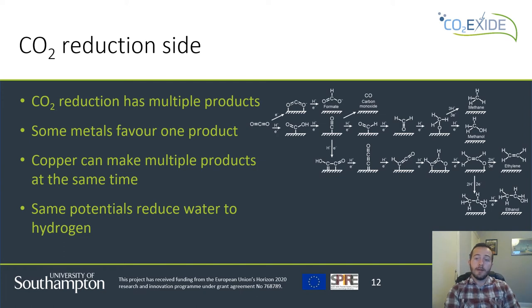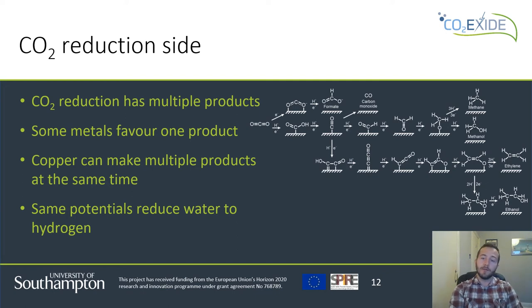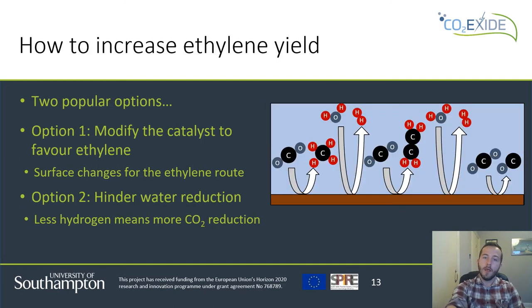Another factor worth highlighting is that the route to ethylene has to pass through a surface-adsorbed carbon monoxide molecule. It's possible that this carbon monoxide could be released — that's the route to giving carbon monoxide as the end product. So convincing carbon monoxide to stick around at the electrode surface so it's further reduced all the way to ethylene is a common theme in trying to increase that selectivity. A further challenge is that the potentials we apply for carbon dioxide reduction are also negative enough to reduce water to give hydrogen gas. So in our gas outflow we would expect to have a mixture of ethylene along with methane, carbon monoxide and also hydrogen as byproducts.